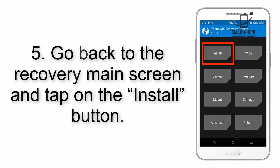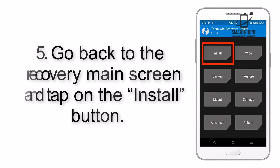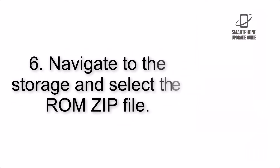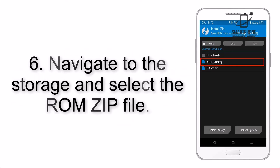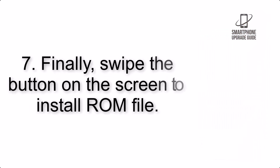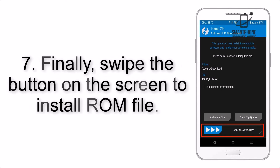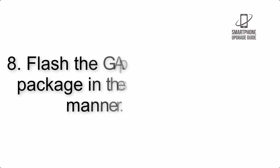Step 5: Go back to the recovery main screen and tap on the Install button. Step 6: Navigate to the storage and select the ROM zip file. Step 7: Swipe the button on the screen to install the ROM file.